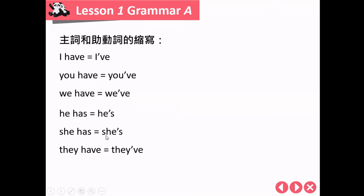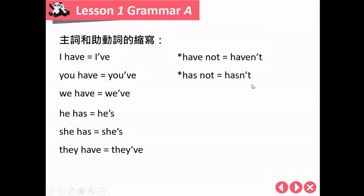同样道理，she's 在以前同学的概念只有 she is，但因为加上了现在完成式，它也代表着 she has。完全要由前后文才能判断到底代表的是 is 还是 has。另外，have not 缩写变成 haven't，has not 缩写变成 hasn't。请大家记住，have 在现在完成式的词类是助动词，它才有办法进行这样的缩写。